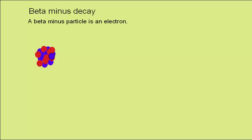A beta minus particle is an electron. A neutron in the nucleus, this one here I've circled in black, is going to turn into a proton, ejecting the beta minus.